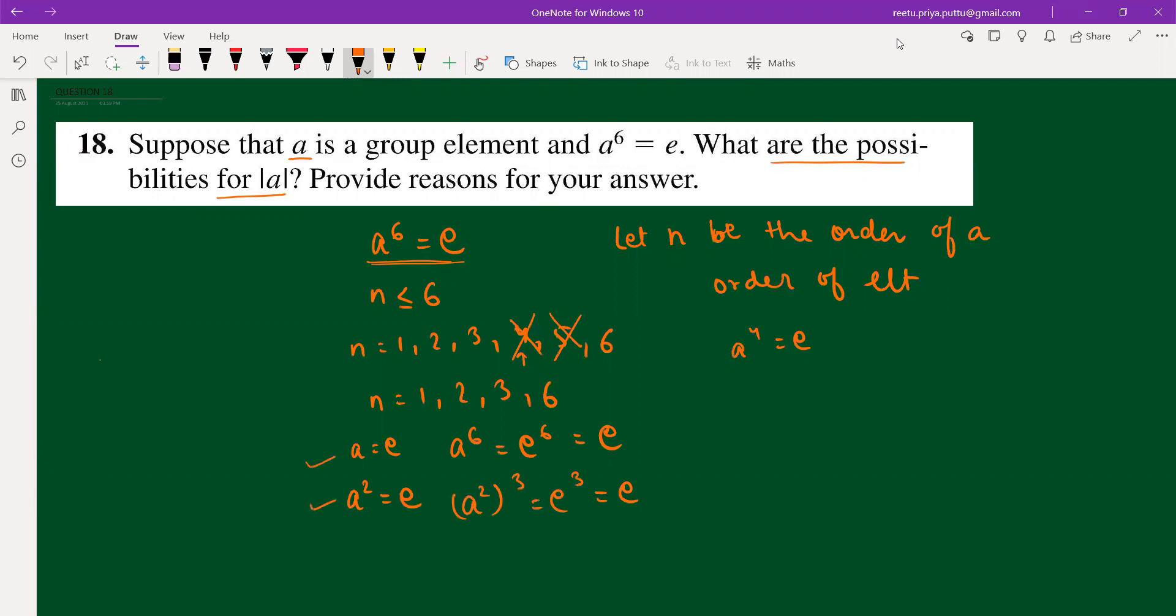So 1 is also there, 2 is correct. Now for 3 also, if A cube equals identity, then A cube square equals E square equals identity.